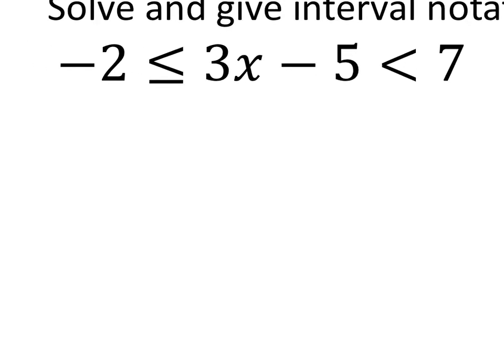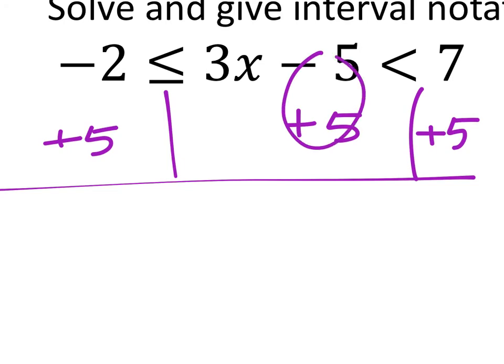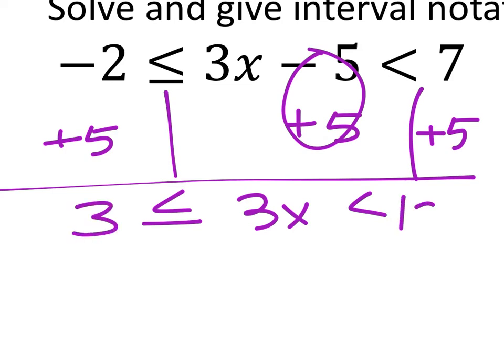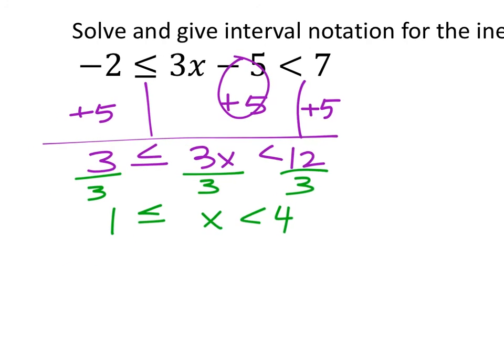This one asks to solve and give interval notation. We'll do the graph too. Add five to all three parts: negative two plus five is three, seven plus five is twelve — both multiples of three. Divide everything by three to isolate x: 1 ≤ x < 4. That's the inequality notation, and the problem also asks for interval notation.